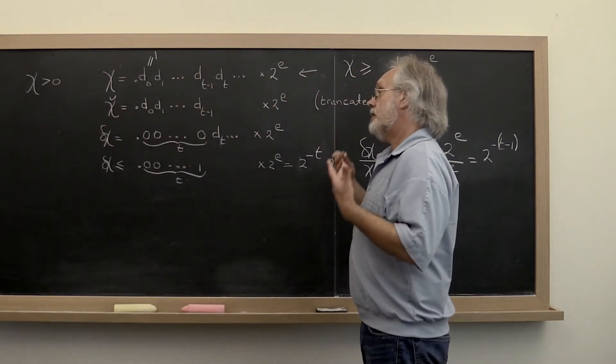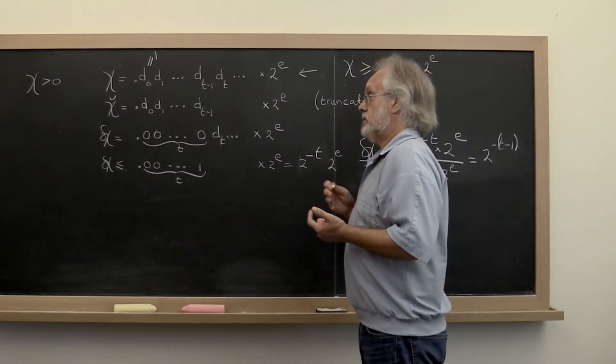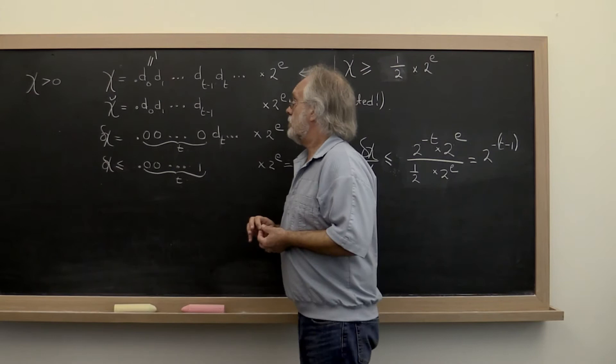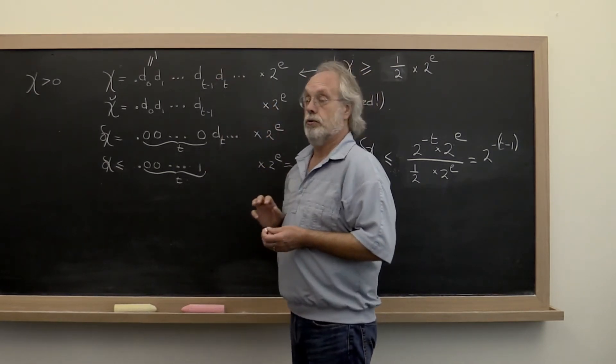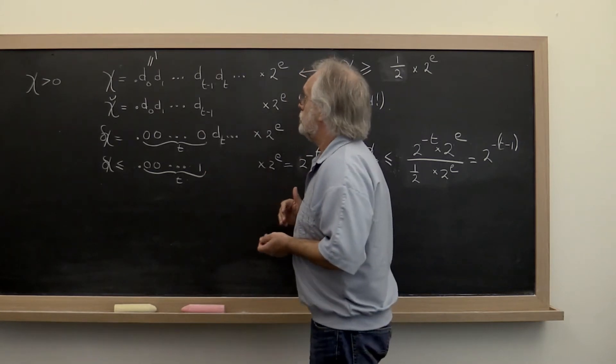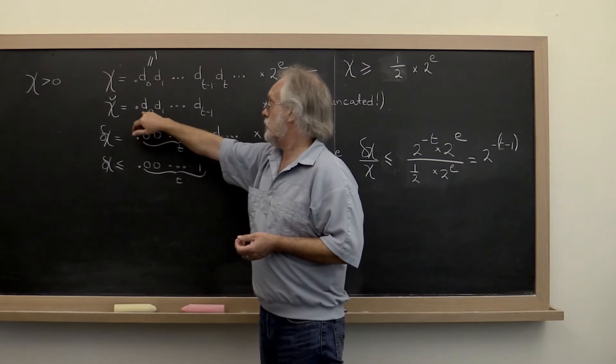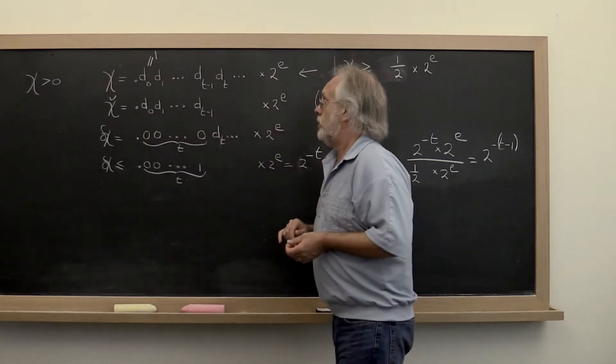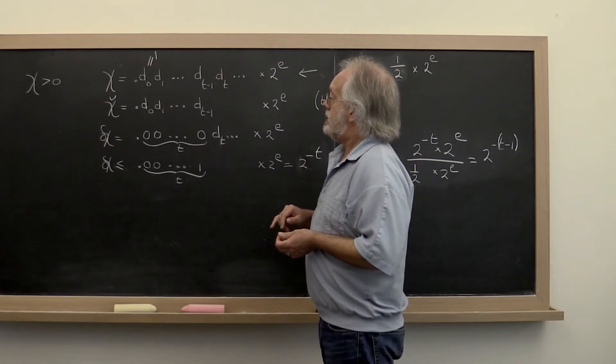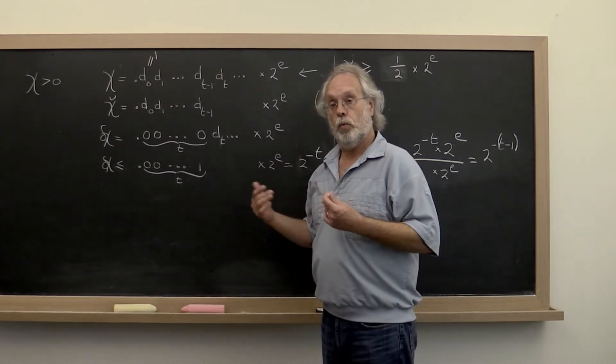If we then only have t binary bits to use to store this number, then the natural thing to do is to either truncate or round. And we're going to truncate because that's a little bit easier to analyze. So if we truncate then we're going to only store the first t bits and the exponent. And the question then becomes what kind of error do we introduce when we do this?